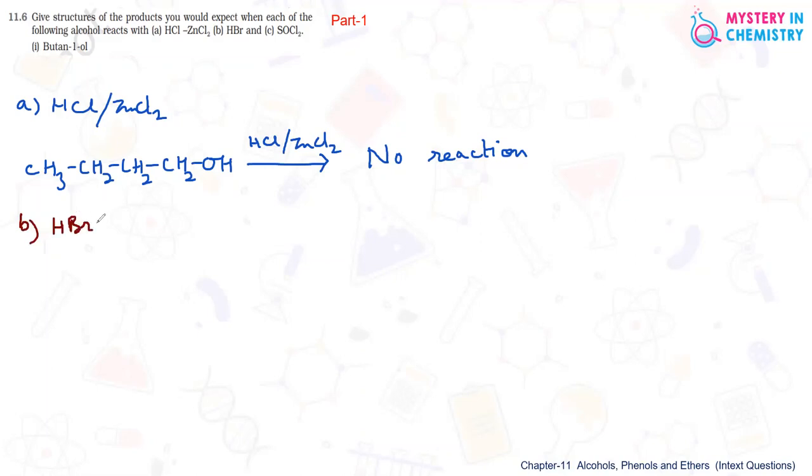HBr can react very easily with CH3-CH2-CH2-CH2-OH, primary alcohol and by this OH is replaced by Br. So CH3-CH2-CH2-CH2-Br.